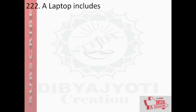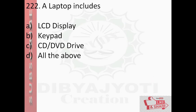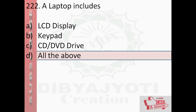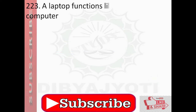Question number 222: A laptop includes LCD display, keyboard, CD or DVD drive. Option D, all of them — and the answer is option D, all of them. Question number 223: A laptop functions like a desktop computer. Option A, true; option B, false. The answer is true.